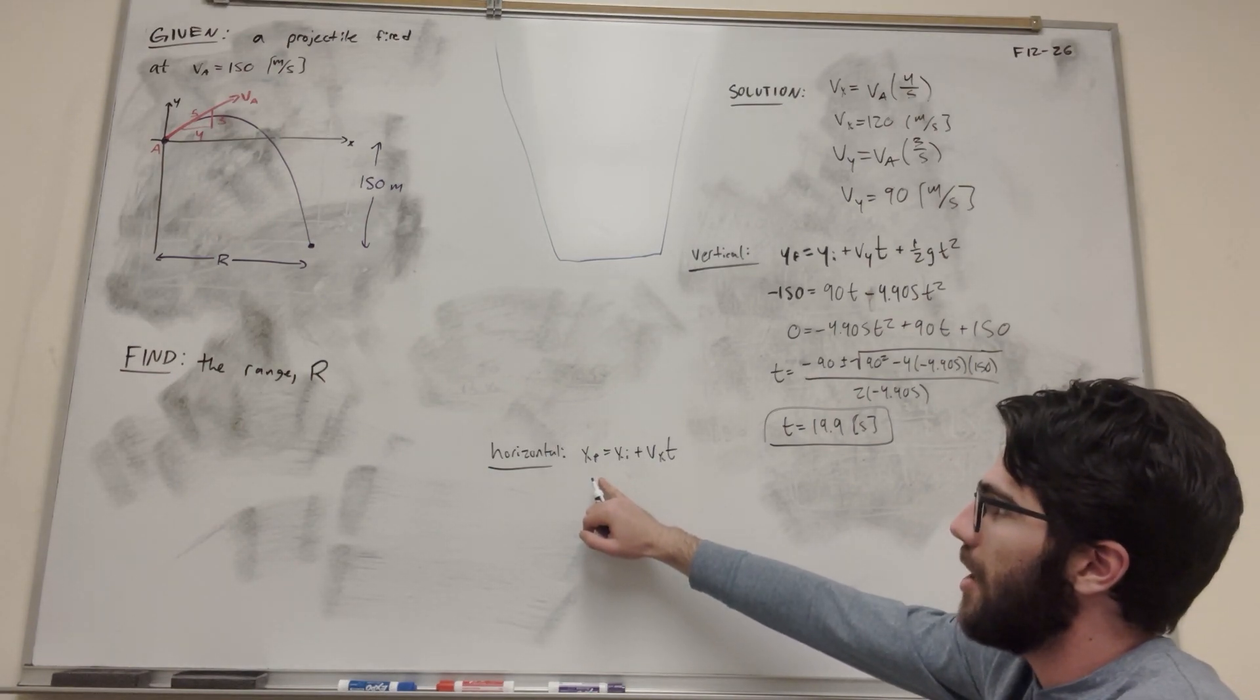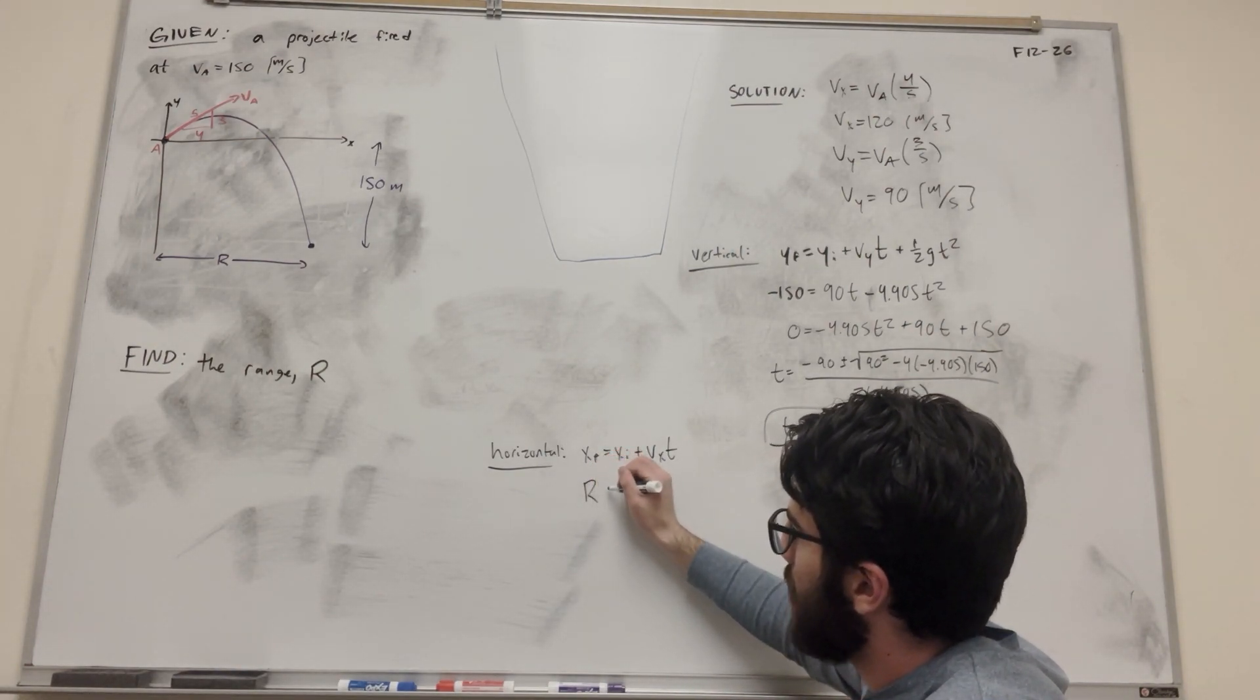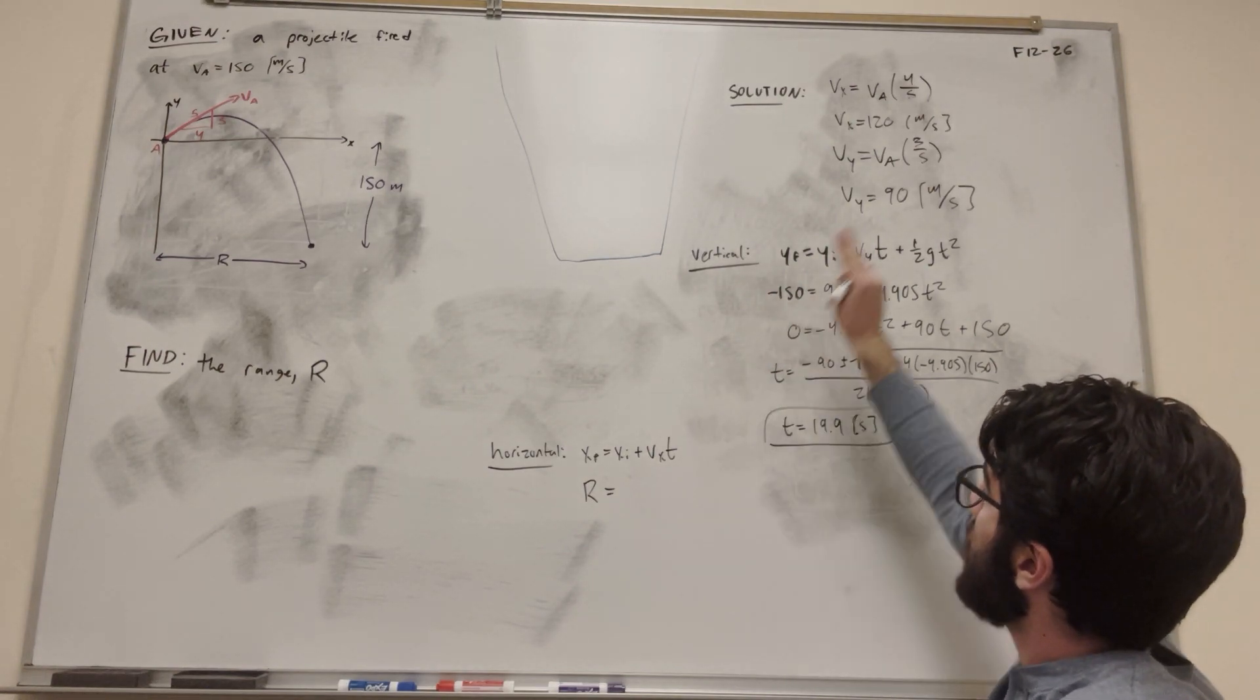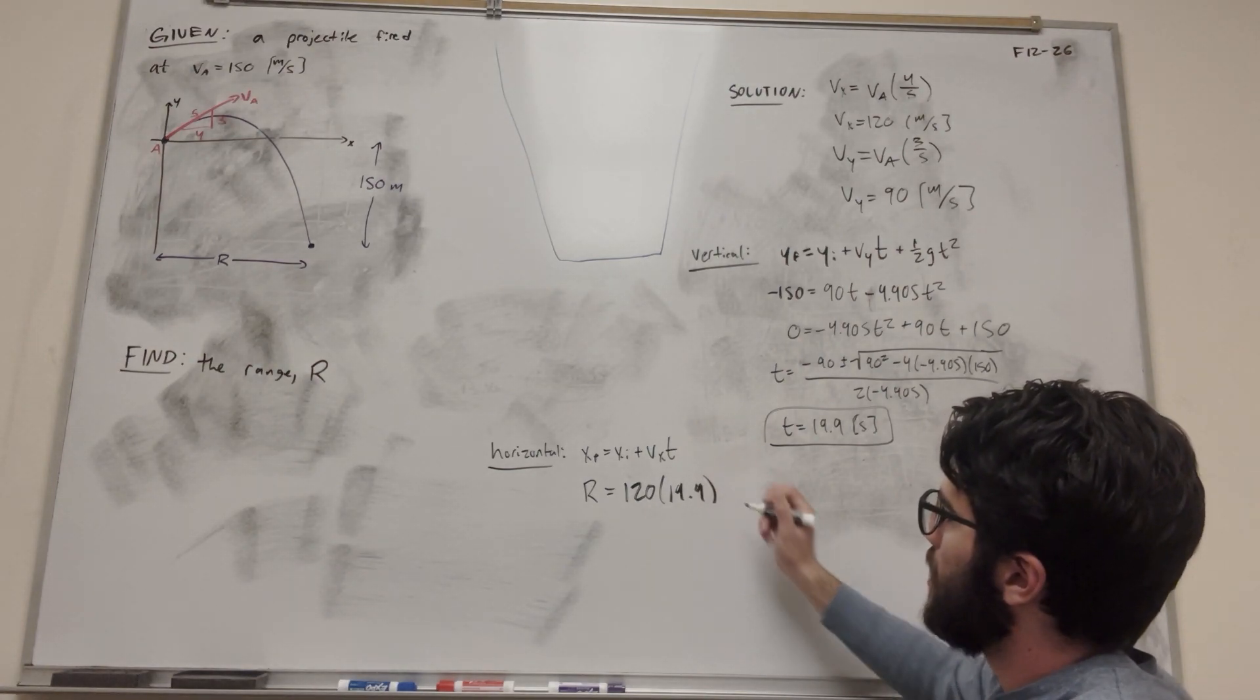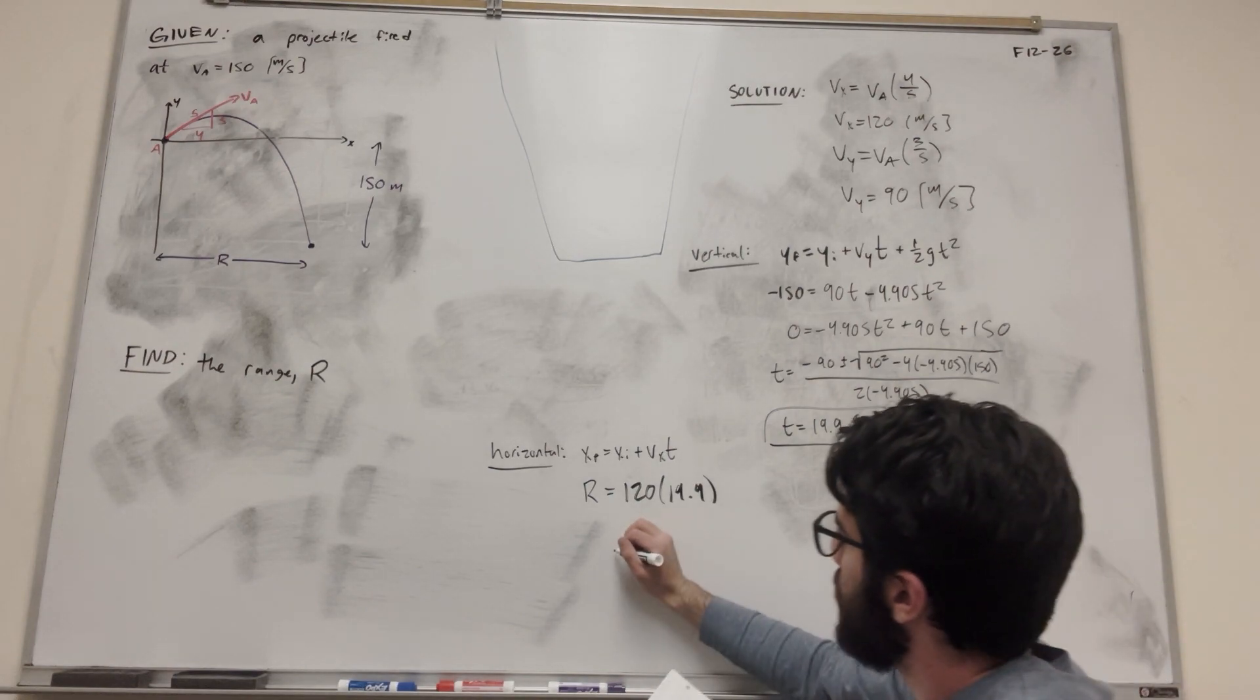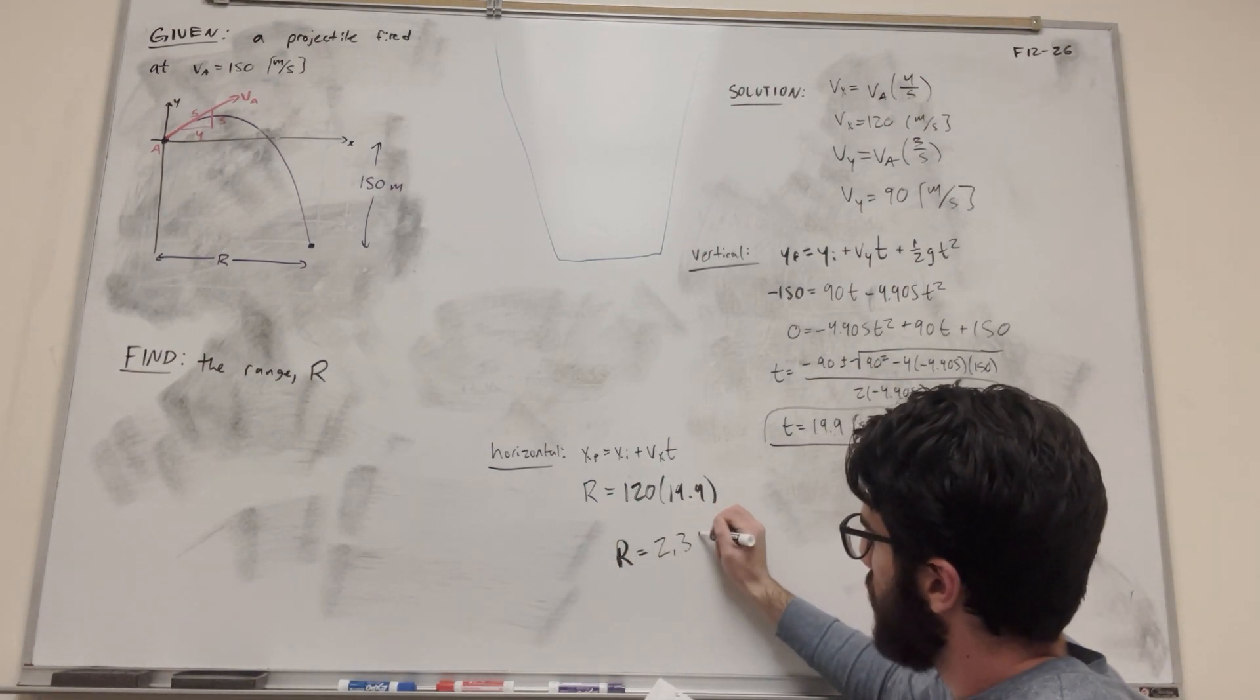So again, let's plug in what we know. x final is going to be r, that's the distance we're solving for. So x final is going to become r. x initial, we're starting at the origin, so it's zero. Velocity x, we calculate it to be 120. And then time, we just calculate it 19.9. All right, so here we are. So all I have to do is plug those into your calculator, and you get r is equal to 2,390 meters.